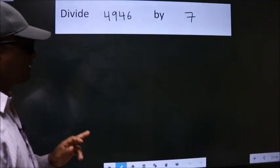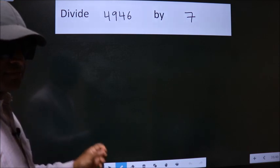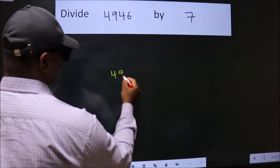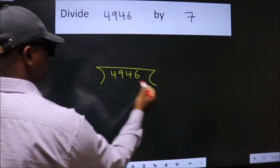Divide 4946 by 7. To do this division, we should frame it in this way: 4946 here, 7 here.